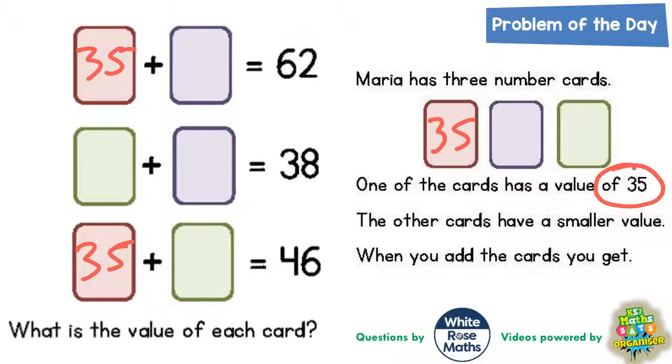Well, 35 plus something is 62. So 62 take away 35 will figure out what the purple one is. 2 take 5 we can't do, so borrow. 12 take away 5 is 7, 5 take away 3 is 2.